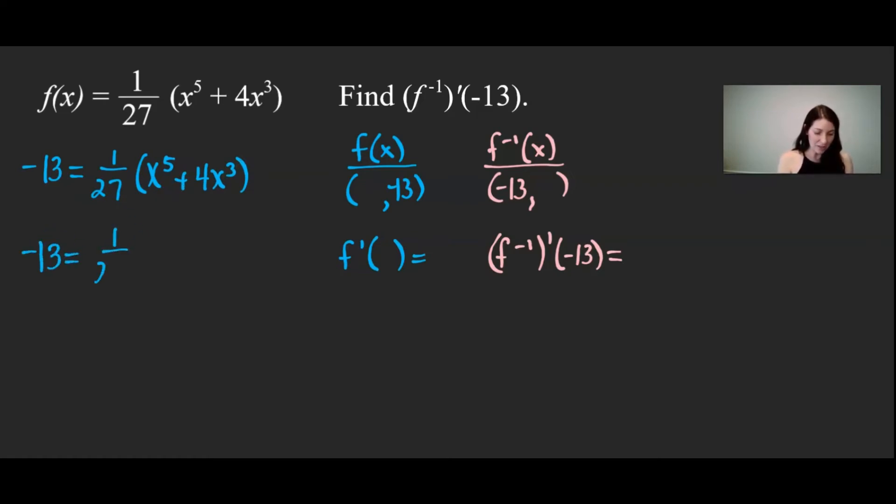And it turns out, I can try a bunch of different numbers, but it turns out if I plug in negative 3 into my x values here, this would actually produce the y coordinate of negative 13. So the x coordinate that matches the y coordinate of f of x is going to be negative 3. Since that's the x coordinate of f of x, it's going to be the y coordinate of f inverse.